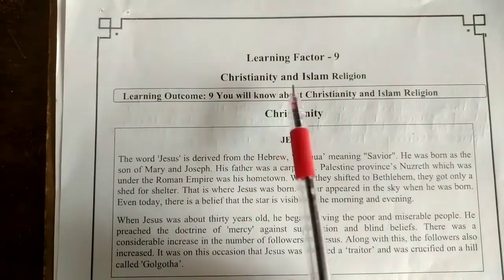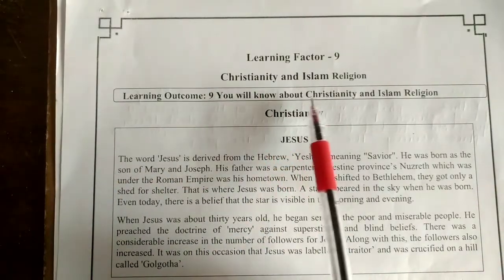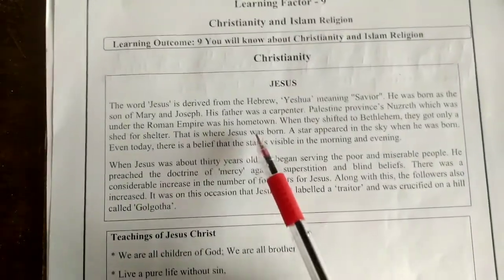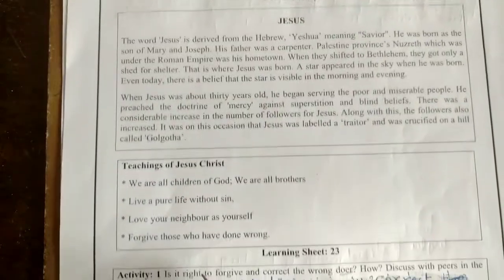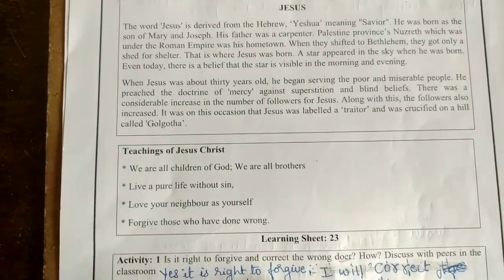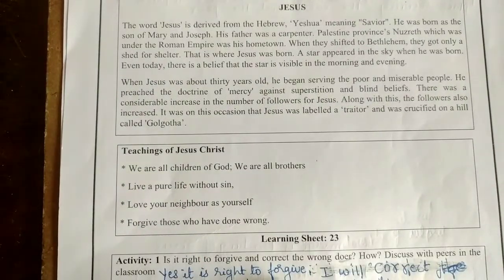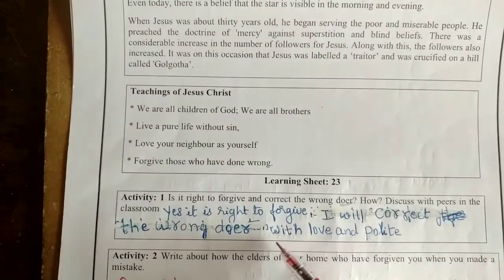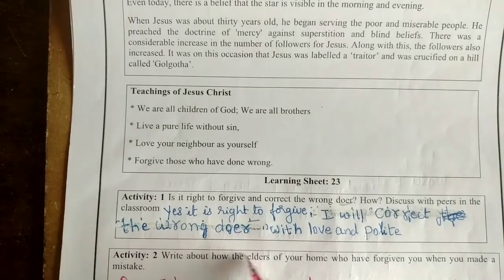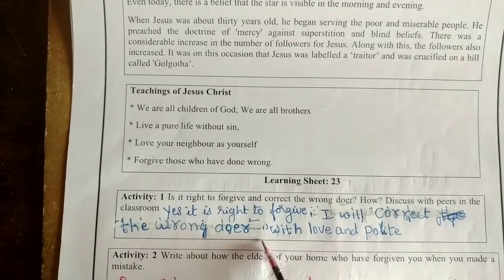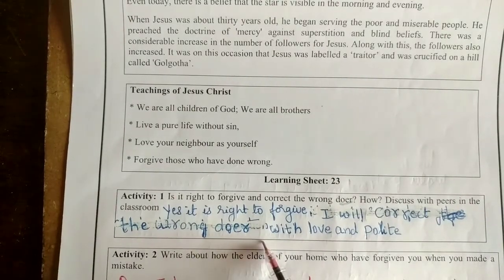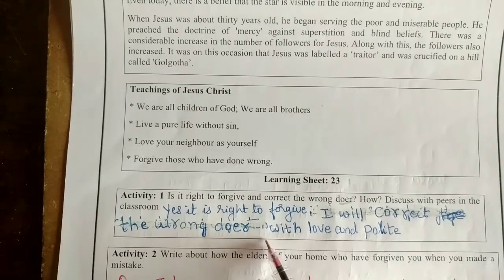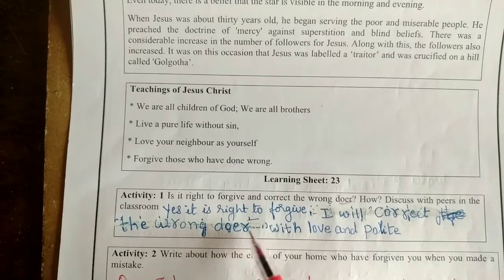Learning Factor 9: Christianity and Islam Religion. Read the given information. Before going for the activity solution, I would like to apologize because just the scratches and overwriting are there. I am extremely sorry for that.